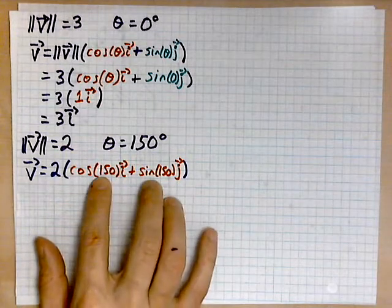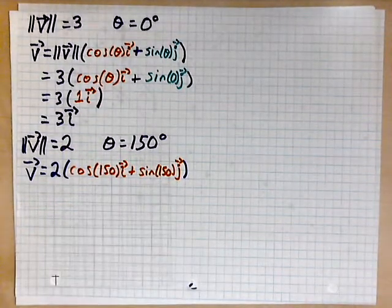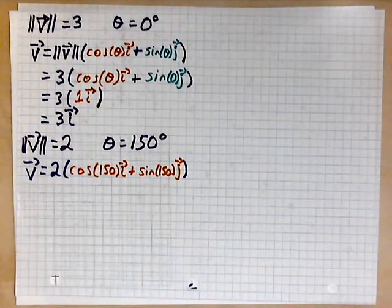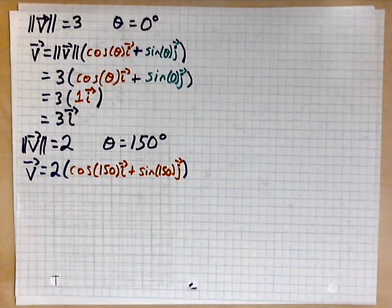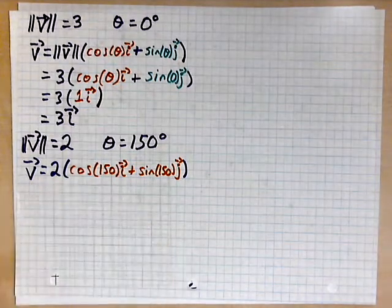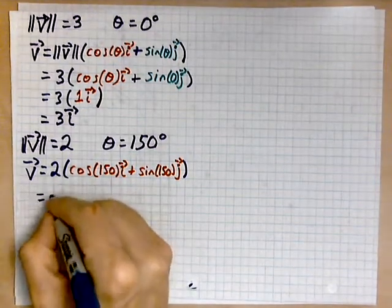So, now we evaluate the cosine and sine of 150, respectively. So, those values are the following. Let me replace them.